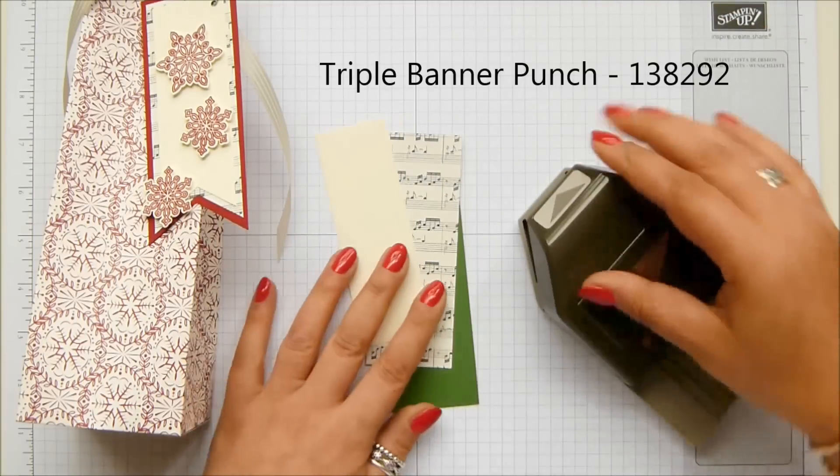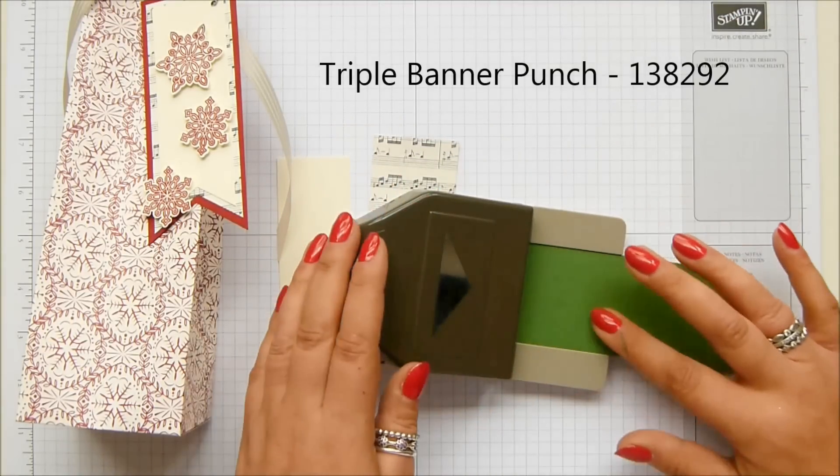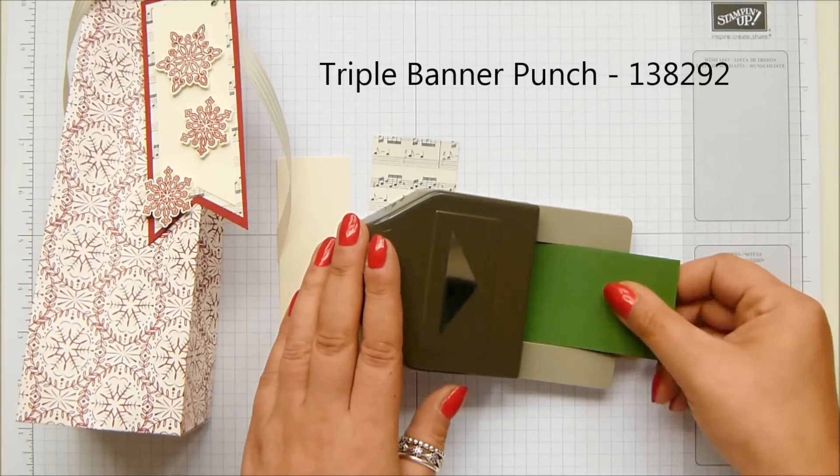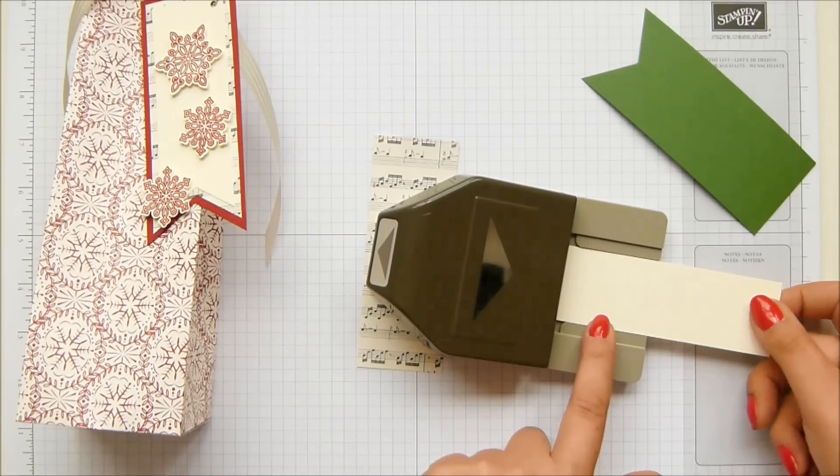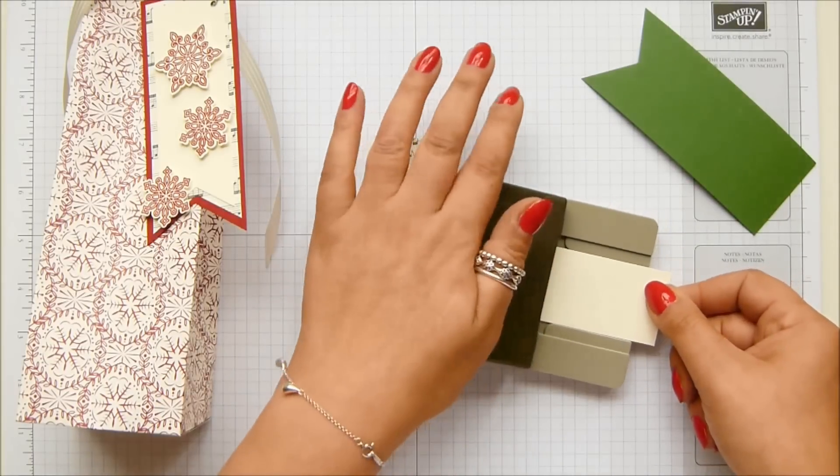And you need your triple banner punch for this. Now I'm going to do the first and the largest and the smallest, because at two inches, five centimeters, it slips perfectly in the provided grooves. And the smallest one does as well at one and a half inches, because these go down in half inch increments. So that fits perfectly in as well.